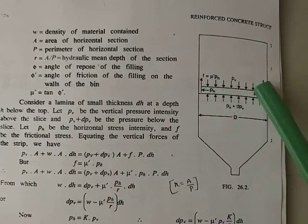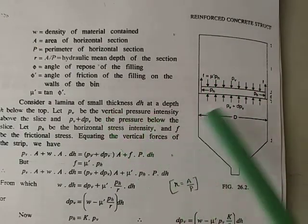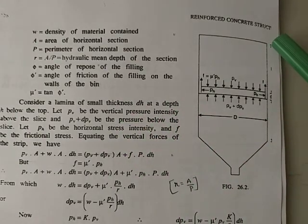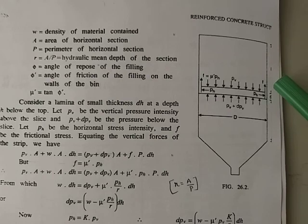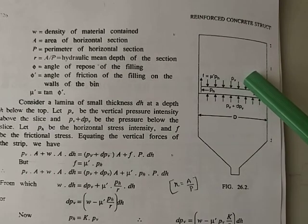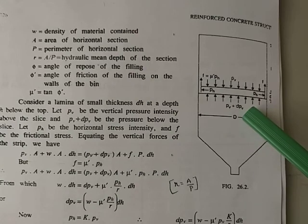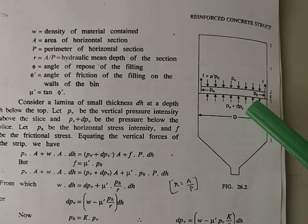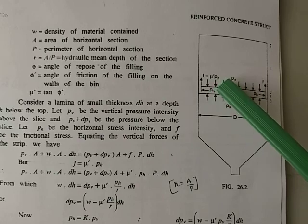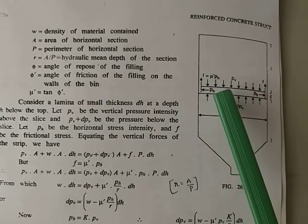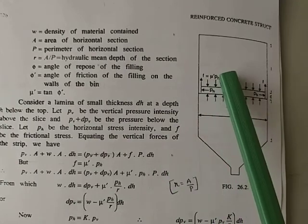The coefficient of friction μ' equals tan φ'. A thin lamina of thickness dh is taken at depth h below the top of the cylinder. Let pv be the vertical pressure intensity above this slice, pv + dpv the pressure below it, ph the horizontal stress intensity acting outward on the walls, and f the frictional stress given by μ' × ph.